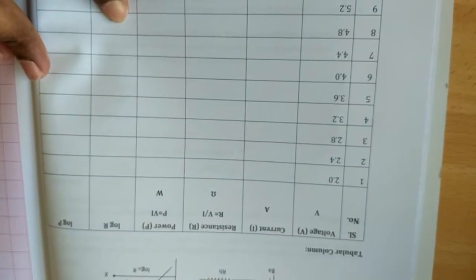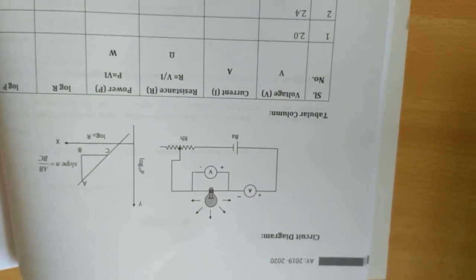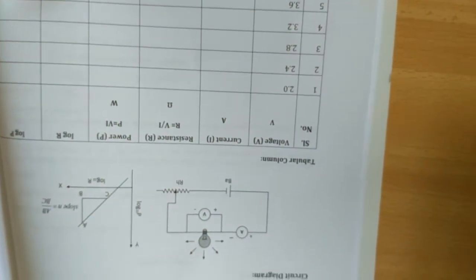Calculating resistance and power, taking their log values and plotting the graph, the slope of your graph should yield the value 4, which verifies Stephen's law.